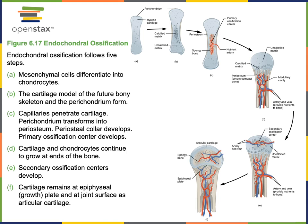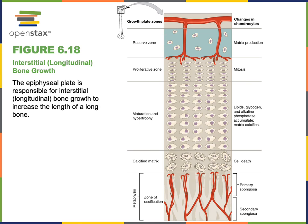There is hyaline cartilage still separating the epiphyses from the diaphysis, and that hyaline cartilage becomes the epiphyseal growth plate that enables interstitial bone growth so that the bone can become longer through adolescence. Interstitial bone growth, also known as longitudinal bone growth, is the mechanism through which a long bone increases in length.